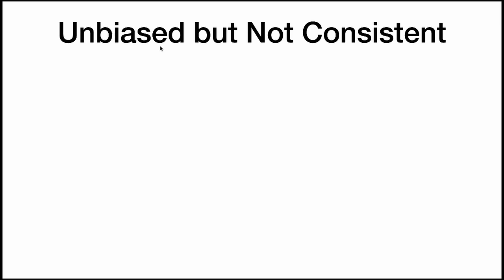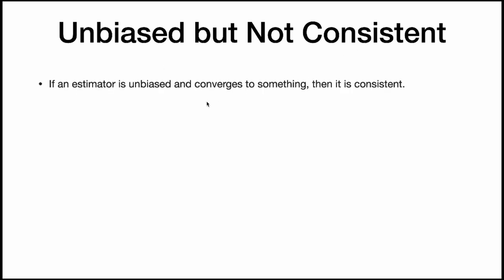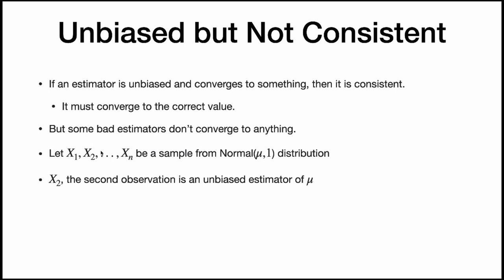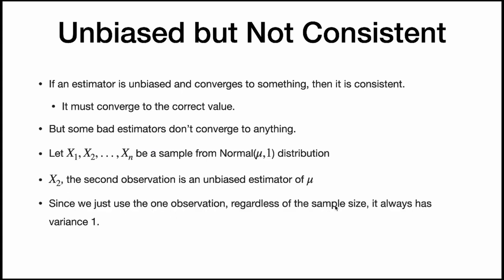In unusual cases, we can get unbiased estimators that are not consistent. If an estimator is unbiased and converges to something, it will be consistent, but some bad estimators don't converge to anything. Suppose we have a random sample from a normal distribution with unknown mean mu, but instead of using the sample mean, we estimate mu with just the second observation. The second observation is an unbiased estimator of mu, but it's not a good one because it doesn't use all the data. Since we use only one observation regardless of sample size, the variance is always just 1 — not 1/n — so it won't converge to anything and thus is not consistent, even though it is unbiased.